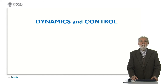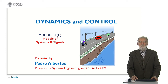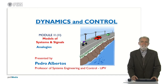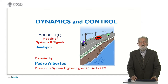Hello everybody. Welcome to the course on dynamics and control. My name is Pedro Albertos from the Polytechnical University of Valencia in Spain, and today we are going to deal with module 2, second part, about models of systems and signals. In particular, we are going to deal with analogies. This is a very important concept because we will see that it doesn't matter what is the technological support of the system — the dynamic behavior of the system can be modeled and represented independently of this technological support.